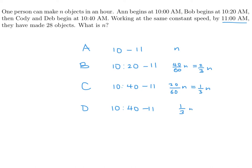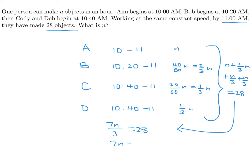Now they're saying that in total, all of these add up to 28 objects. So that means n plus 2 thirds n plus n over 3 plus n over 3 equals 28. So that equation basically is 7n over 3, right? 1, 2, 3, 4, 5, 6, 7. Yeah, 7n over 3 equals 28. So solving, we get 7n equals 84, and therefore n is 12.